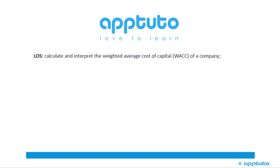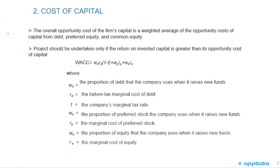This LOS is to calculate and interpret the weighted average cost of capital of a company. The overall opportunity cost of the firm's capital is a weighted average of the opportunity cost of capital from debt, preferred equity, and common equity. A project should be undertaken only if the return on invested capital is greater than the opportunity cost of capital.